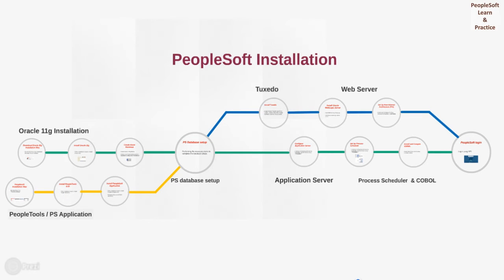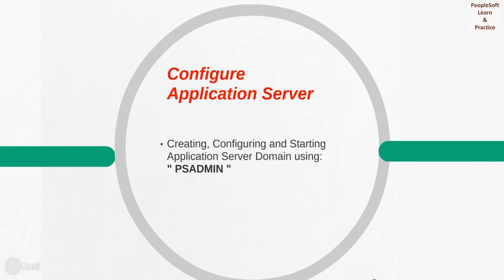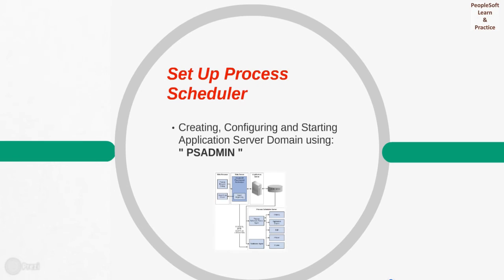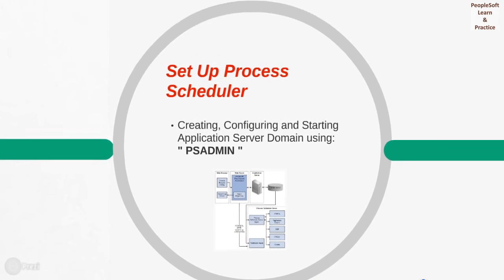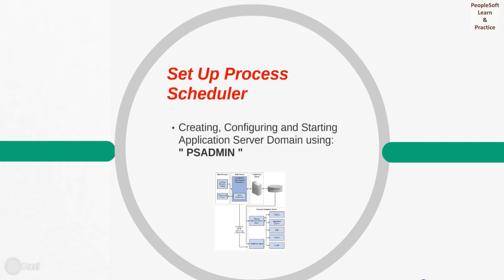Next, we need to create and set up the application server. For configuring the application server, create, configure, and start the application server using psadmin. It is a PeopleSoft-delivered functionality where you can configure your app server and process scheduler. Next step is to set up the process scheduler, which can also be done from psadmin. Before doing that, we have to set up nodes from PIA. In this architecture, web browsers are linked with the web server, which is linked to the application server, which is connected to the DBMS, which is connected to the process scheduler that is responsible for running scheduled processes.